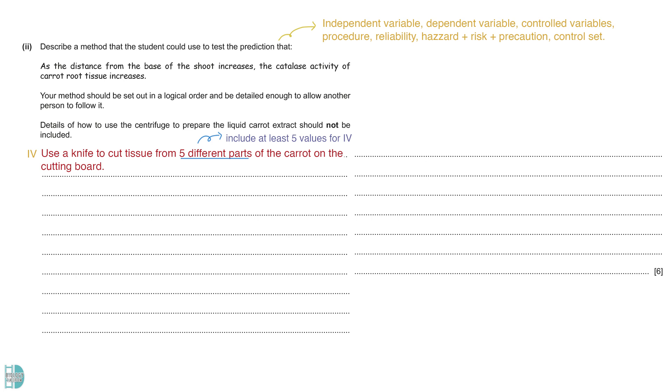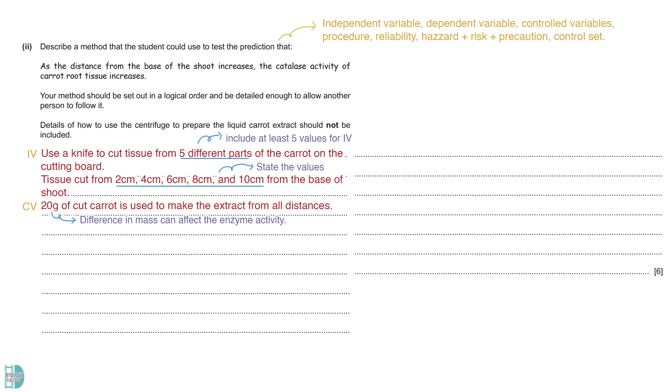You should have at least five values for this. We can use a knife to cut tissue from five different parts of the carrot on the cutting board. State the distances will give you another mark. For each distance, 20g of cut carrot is used to make the extract.